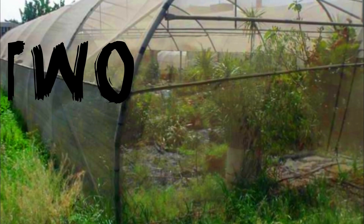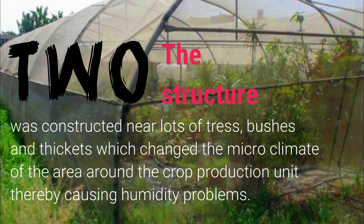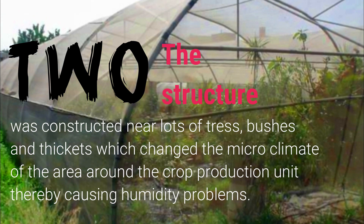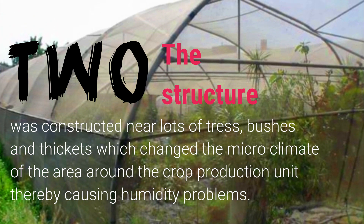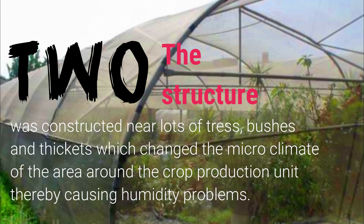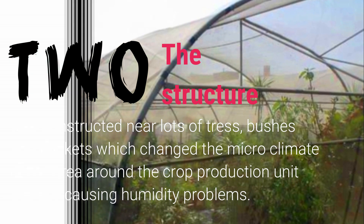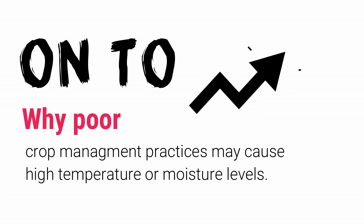Two, the structure was constructed near lots of trees, bushes, and thickets, which changed the microclimate of the area around the crop production unit, thereby causing humidity problems. On to why poor crop management practices may cause high temperatures or moisture levels.